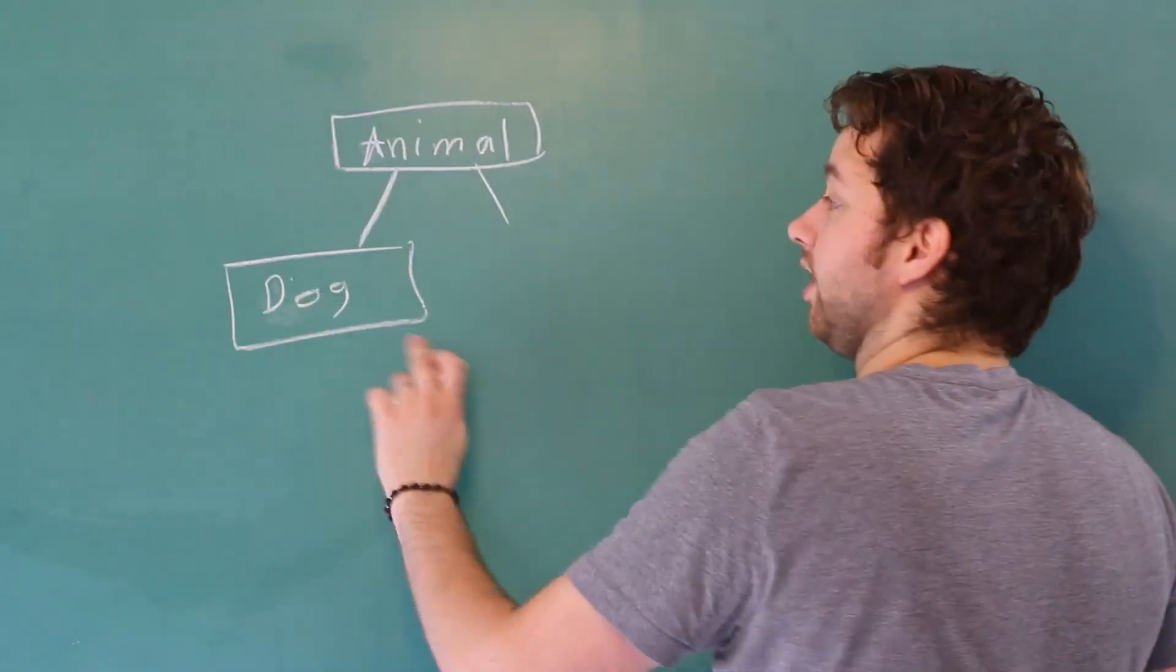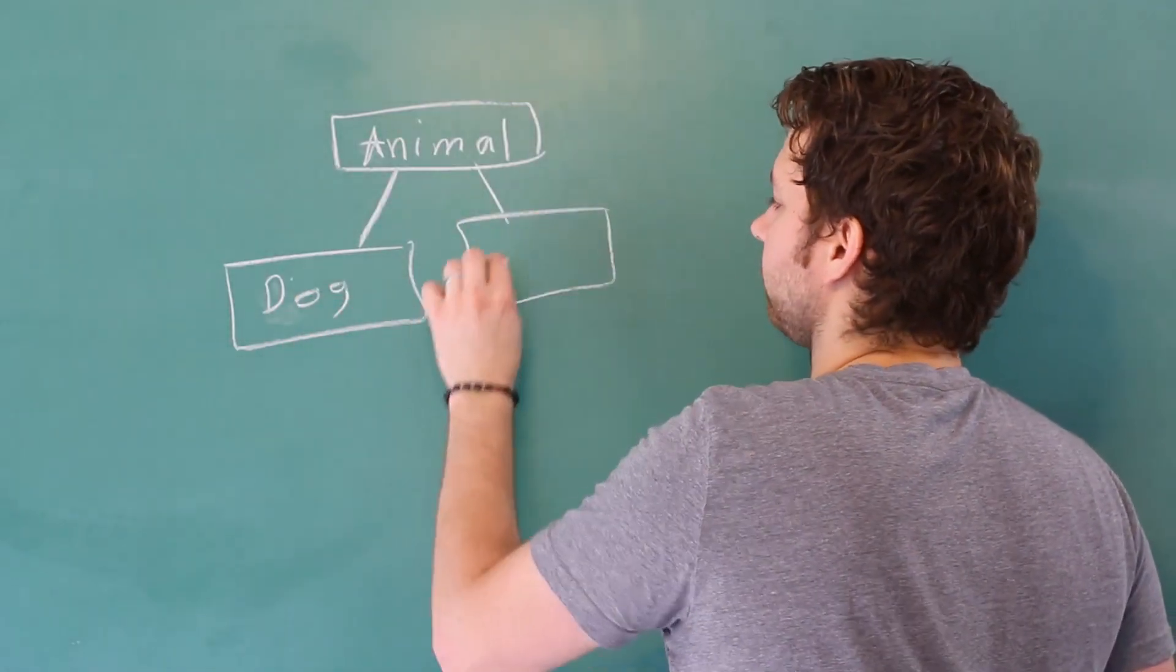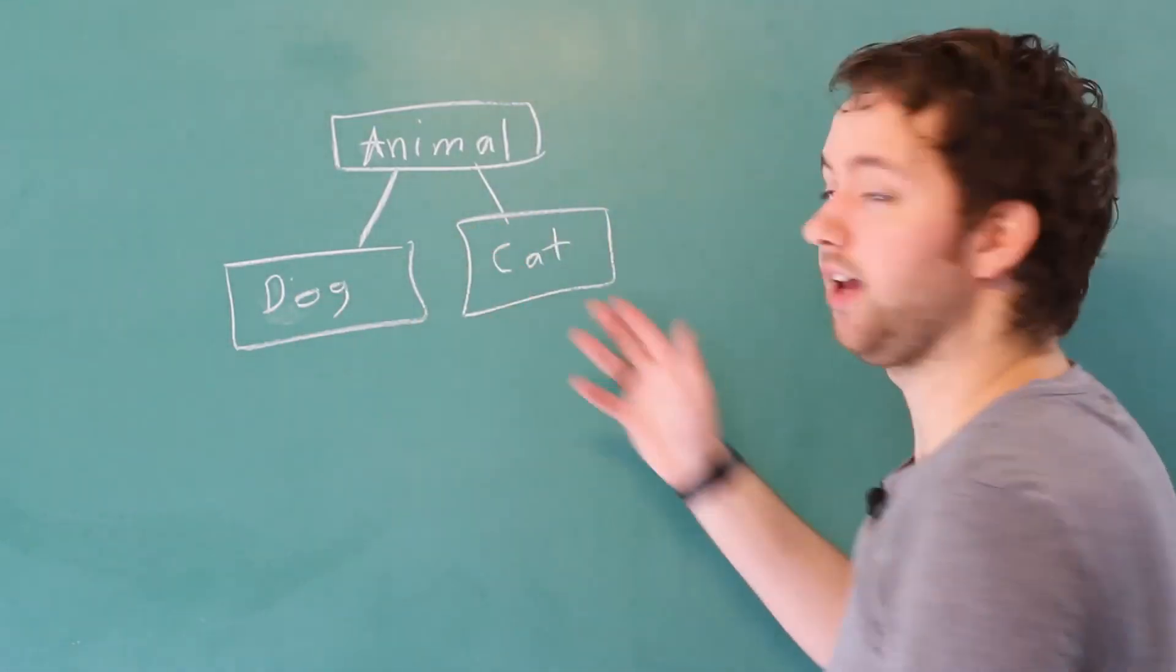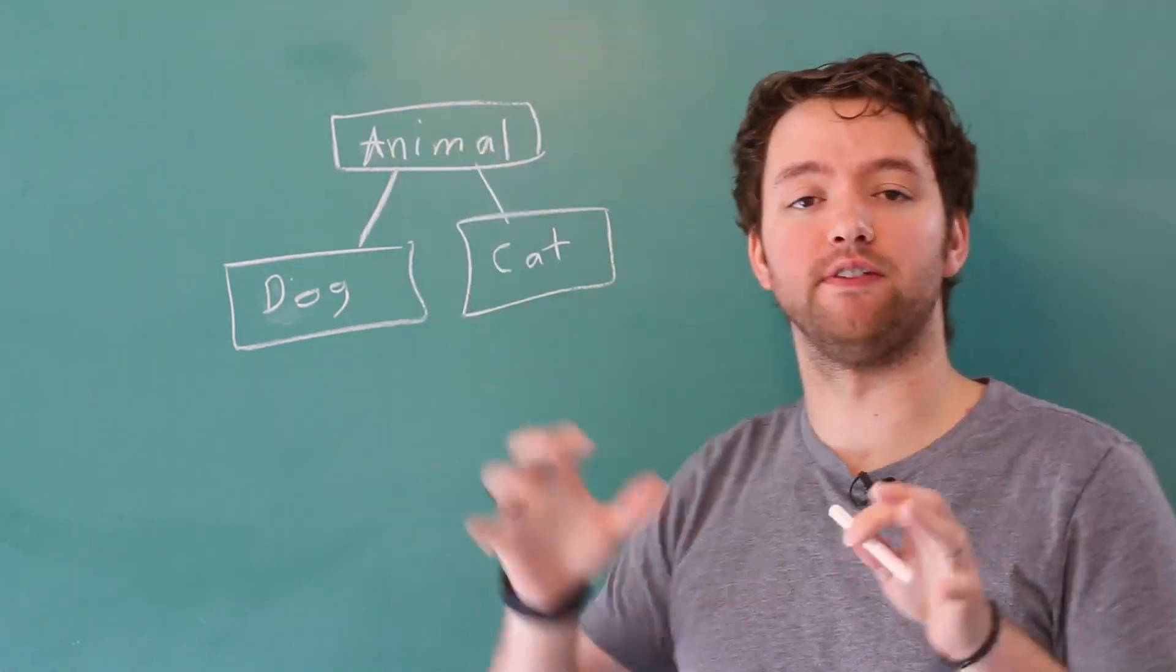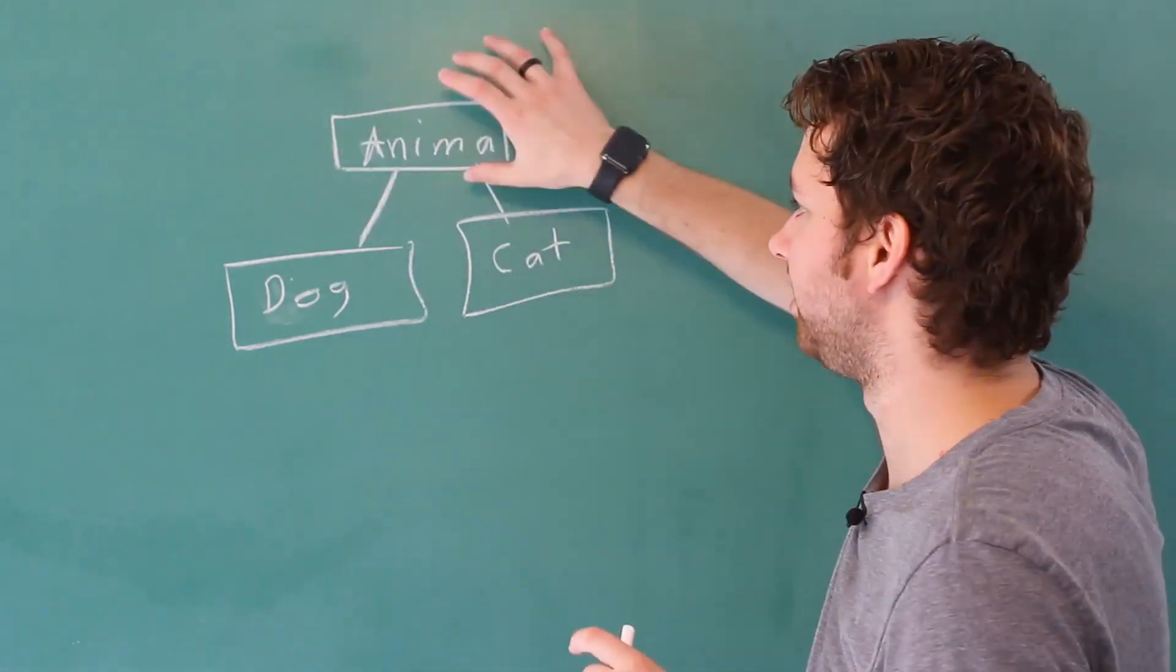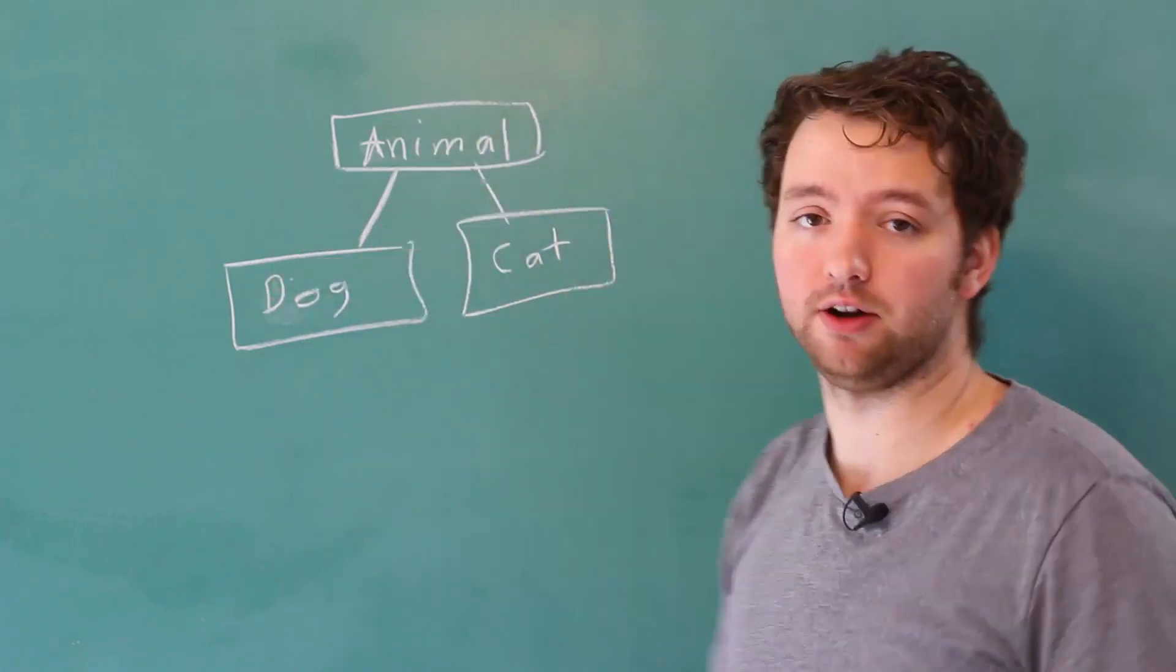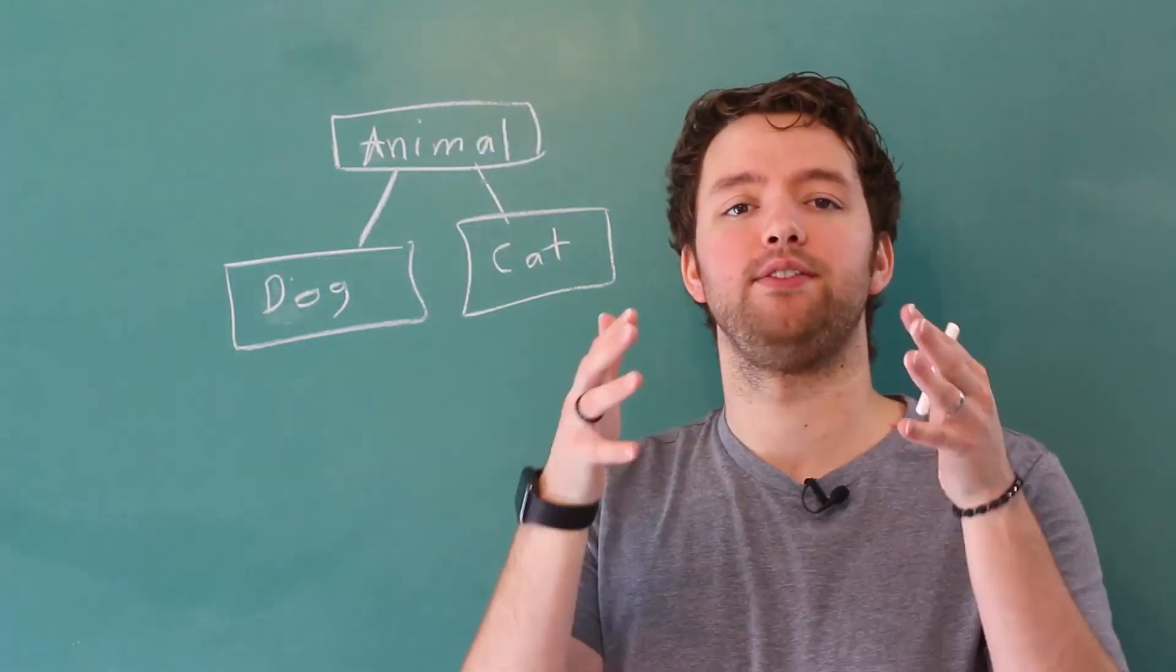So a common example is with animals. You could have an animal class and then you can have a dog class and a cat class. These are going to be animals. So we can define common behavior in this animal class and the dog and cat are automatically going to get that behavior.